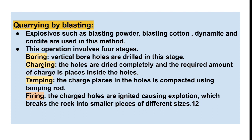Quarrying by blasting involves multiple stages. Explosives such as blasting powder, blasting cotton, dynamite, and cordite are used. First, boreholes of certain depth are dug and dried completely, then the required amount of explosive charge is placed inside — this is called charging. The charge is then compacted using tamping rods. Finally, the charged holes are ignited, causing an explosion that breaks the rocks into smaller pieces of different sizes.